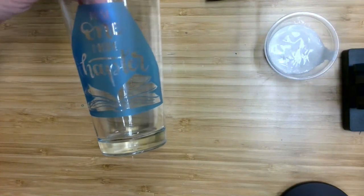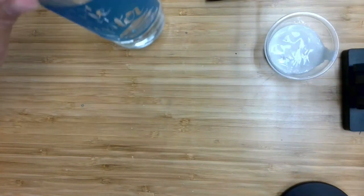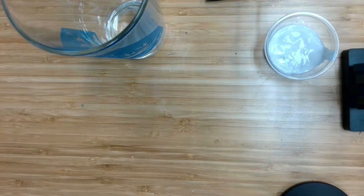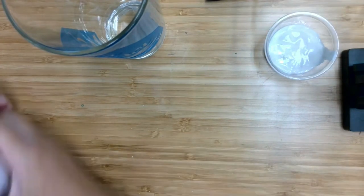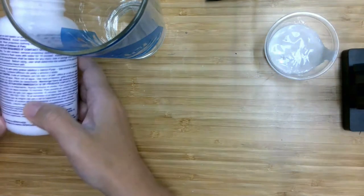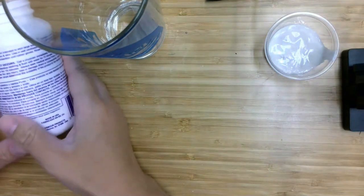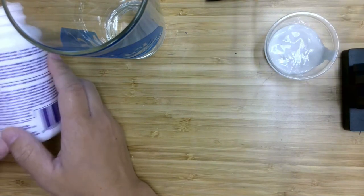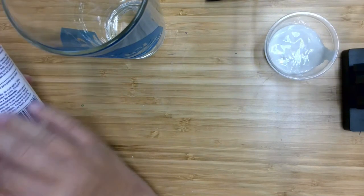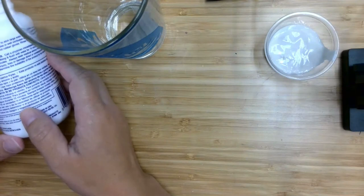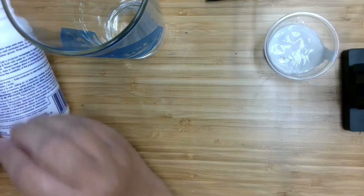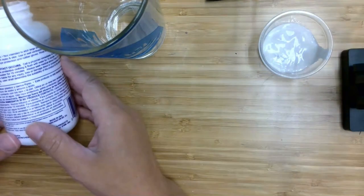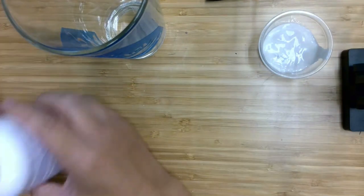And now we're ready to start etching. Please make sure to read the safety information that I included, everything that's here on this label. You want to do this in an area that is well ventilated. If you can do it outside, that would be best. You don't want it touching your skin or get anywhere near your eyes. Okay, so we are going to put our gloves on.